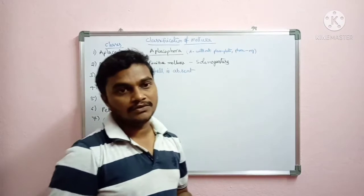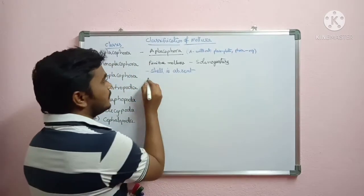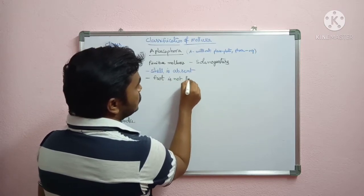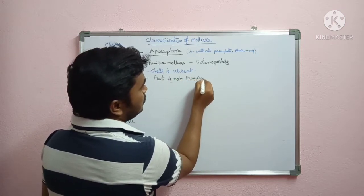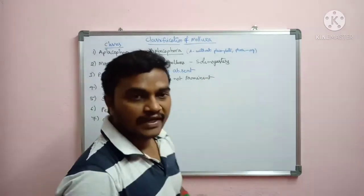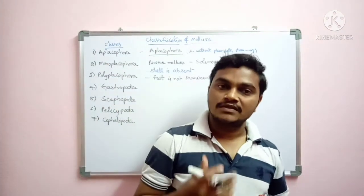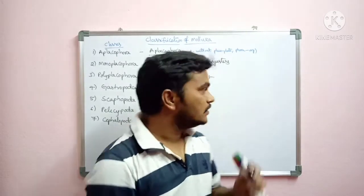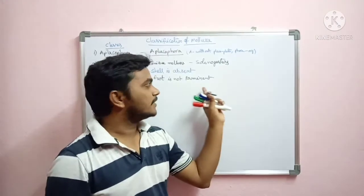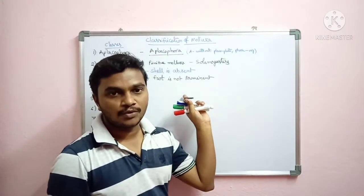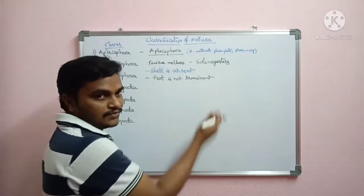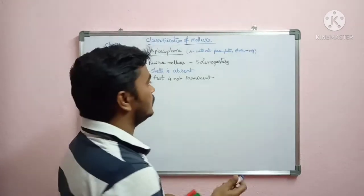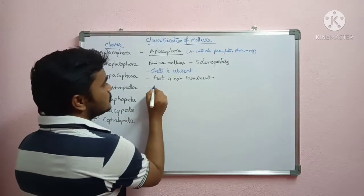There is no shell in Aplacophora, and at the same time, the foot is not prominent. There is no particular foot region. Normally mollusks have head, band, visceral mass, foot, and shell as their parts. In Aplacophora, the foot is also not prominent — it is vestigial or rudimentary.